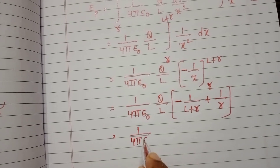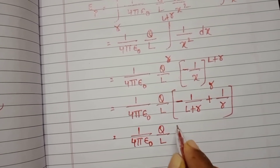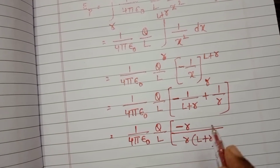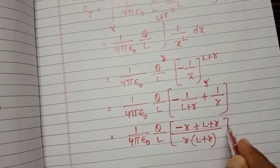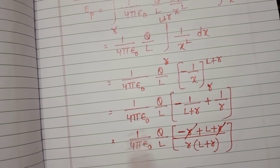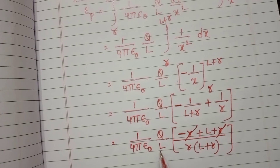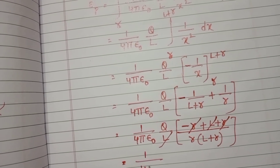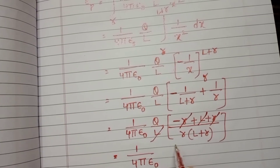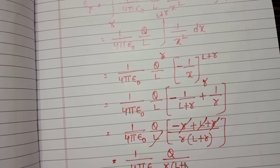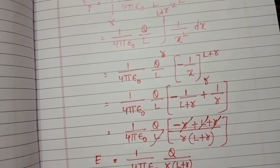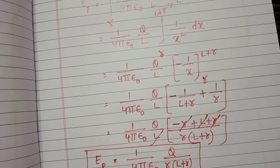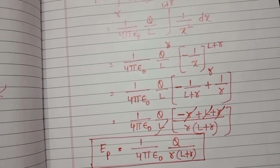Taking LCM as R into (L plus R), the numerator becomes minus R plus (L plus R), which simplifies to L, since plus R and minus R cancel. The L in the numerator and the L in Q by L also cancel. So the final result is E equals 1 by 4 pi epsilon-zero into Q by R(L plus R). This is the formula for the intensity of electric field at a point P on the axial line of a uniformly charged rod.